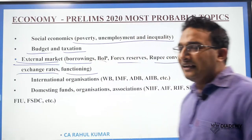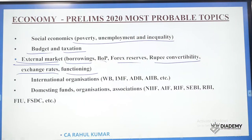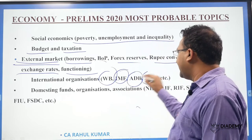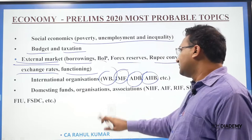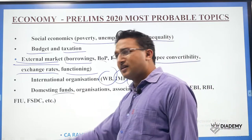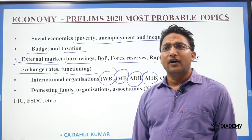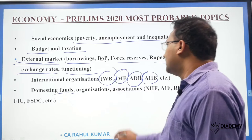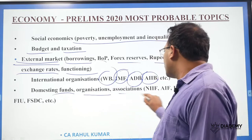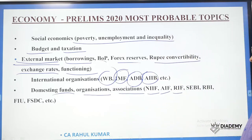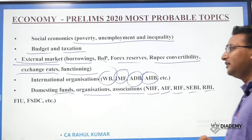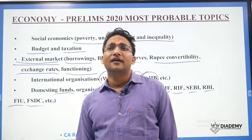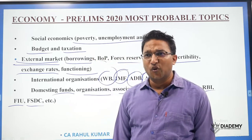International organizations are always very important — World Bank, IMF, Asian Development Bank, AIIB, and other banks. Also cover domestic funds: all investment funds, acceptance and development funds, and various organizations and associations like NIIF, OAIF, RIF, CB, RBI, Financial Intelligence Units, and the Financial Stability and Development Council — all these organizations which have been in news.